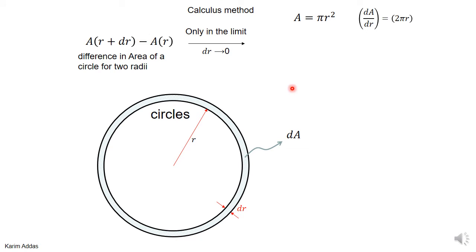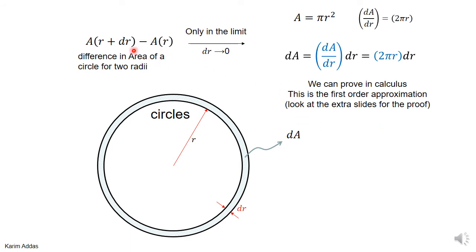There is also a more mathematical, calculus-based way of getting this without relying on the geometric approach. That is to find the difference in the value of a function of r when you change r by a very small amount — the area for radius r plus dr minus the area for radius r. In calculus, this can be done to get the first-order difference: we know the area of any circle is πr², and the derivative of the area with respect to r is 2πr.